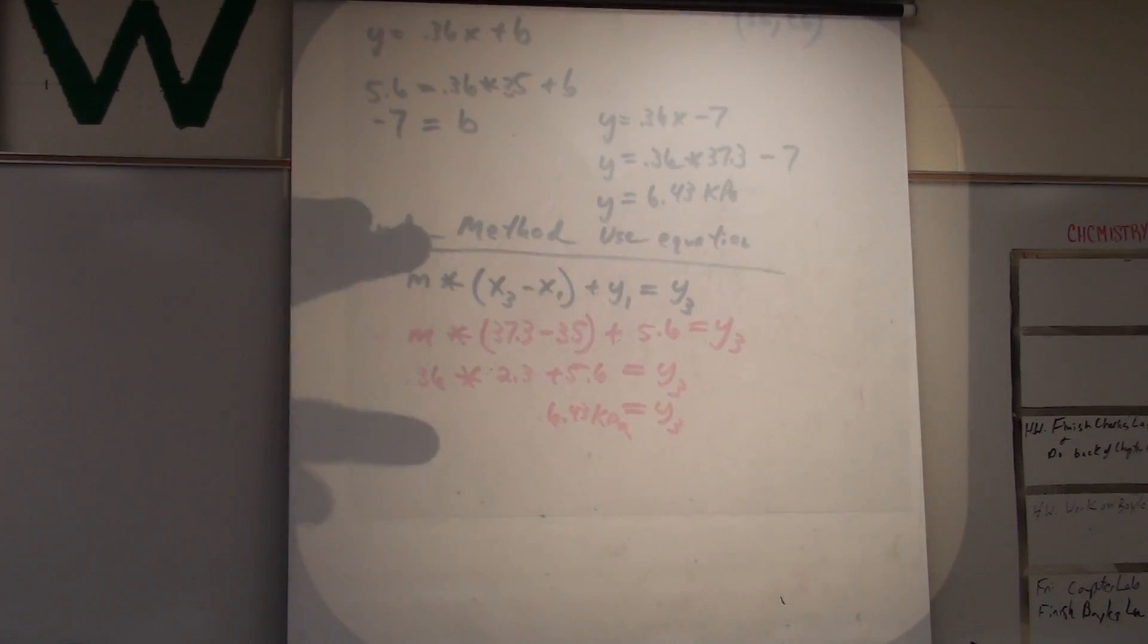So, this one I think is a little bit faster. But I think the top one is easier for you to understand. Because all you have to do is find the equation of Y. Any questions on how to interpolate?